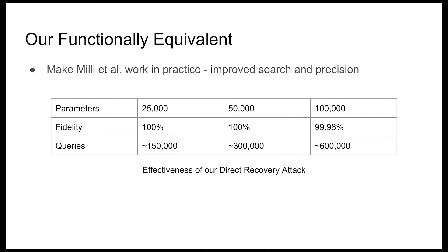Our improvements are to make this work in practice. Milli et al. was proposed in theory, requiring real-valued arithmetic, and it doesn't work with floating-point numbers. We made it work in float64 by improving the boundary search and improving the precision of the numerical algorithms. At the end of the day, with 600,000 queries you can query an MNIST model with 100,000 parameters and recover it with 99.98% fidelity on the test set.